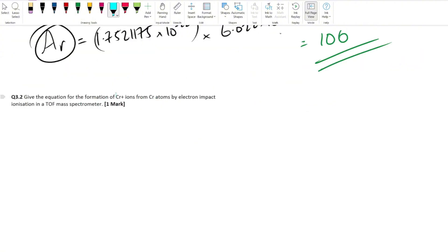We've got a cheeky one marker to round off the video here. Give the equation for the formation of a chromium plus ion from chromium atoms by electron impact ionization in a TOF mass spec. State symbols are really important. Everything in a mass spectrometer is under a vacuum, everything has to be gaseous, and we're starting with chromium atoms. So chromium gaseous. Now we're dealing with electron impact, not electrospray ionization. With electron impact you've got your outer shell of electrons, it's hit with that electron gun and the electron goes off. You're left with your positively charged ion. So the only way we need to represent that is chromium plus gaseous plus electron. That is our one marker. Super easy.